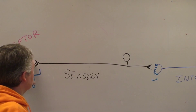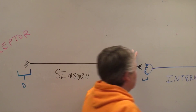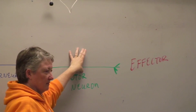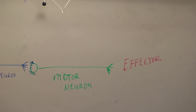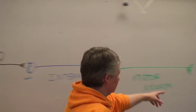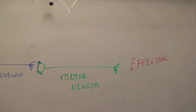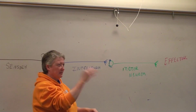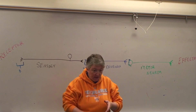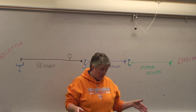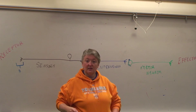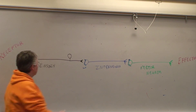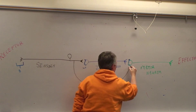So if you touch something hot, the receptor sends a signal to the sensory neuron, which sends a signal to the interneuron, and that sends a signal to the motor neuron, which sends a signal to the effector that says pull your hand back. An interneuron is always between a sensory neuron and a motor neuron. But remember, we can send off an axon collateral and skip it.